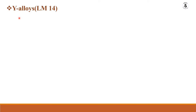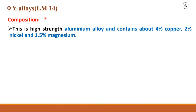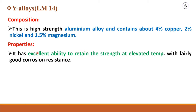Y-alloy, also known as LM14 or Low Metal Alloy 14, is a high-strength aluminium alloy. Its composition contains 4% copper, 2% nickel, and 1.5% magnesium. It has an excellent ability to retain strength at elevated temperatures, giving it wide applications in the automobile industry, with fairly good corrosion resistance.